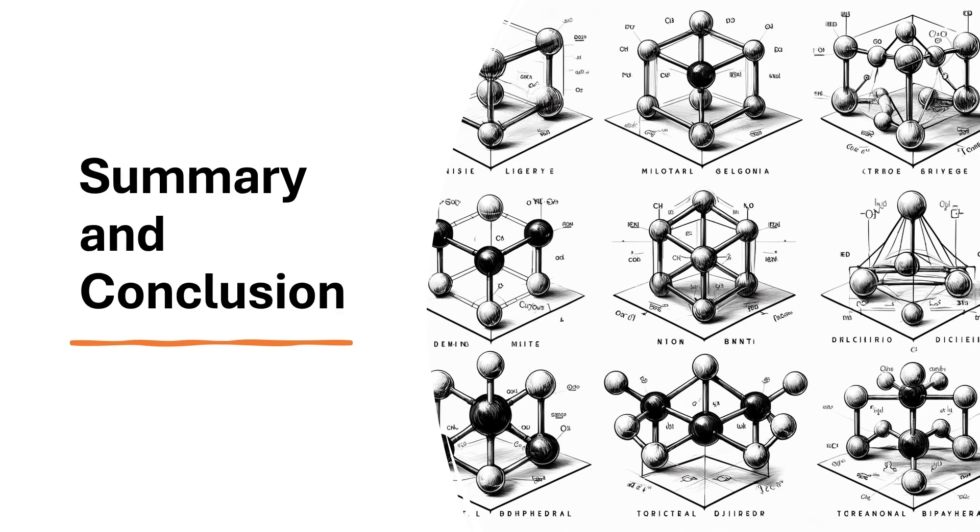In conclusion, understanding chemical geometry allows us to predict how molecules will interact and behave. Whether in industrial applications, daily life, or biological systems, the 3D or the three-dimensional arrangement of atoms or its molecular or chemical geometry is a key to chemistry and beyond.